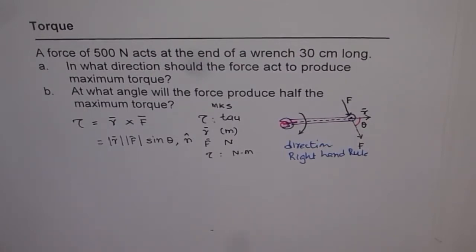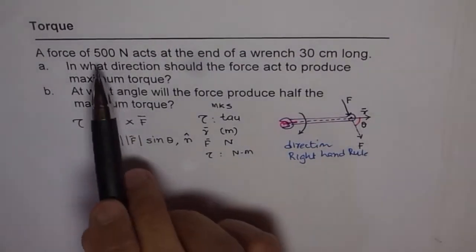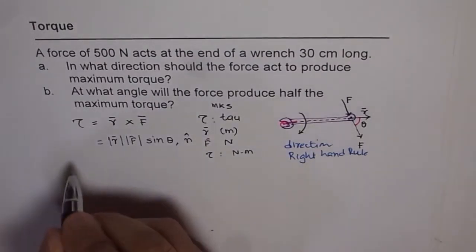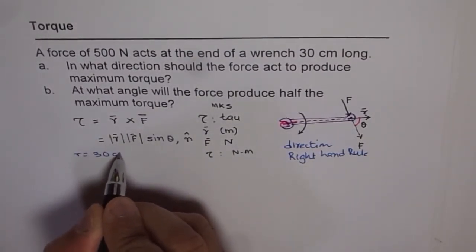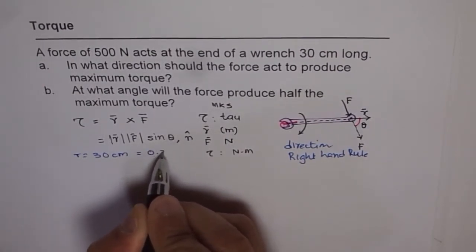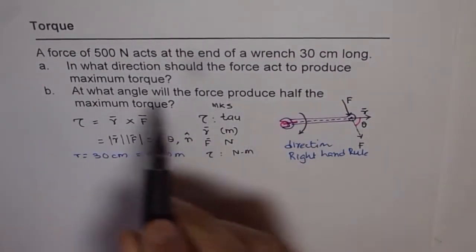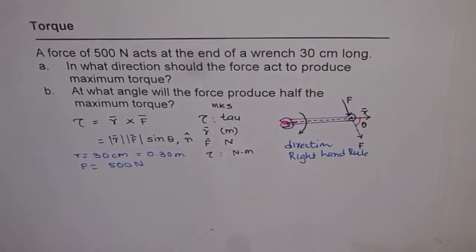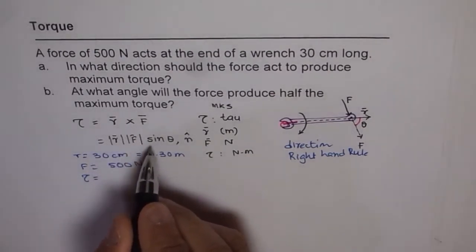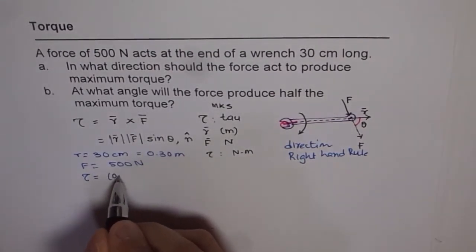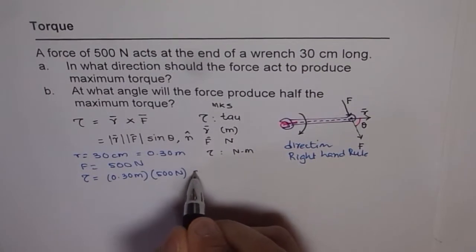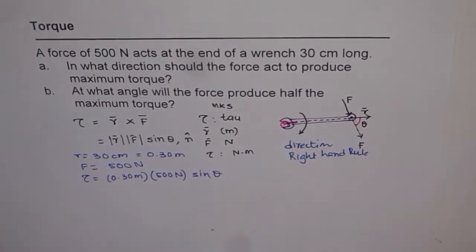Now let's read the question. A force of 500 newtons acts at the end of the wrench. So r is given to us as 30 centimeter, which is 0.30 meters. The force is 500 newtons. So units are perfect. Torque will be equals to r times f sine theta. So r is 0.30 meters and force is 500 newtons times sine theta. That is our equation for torque.